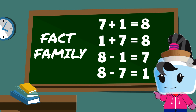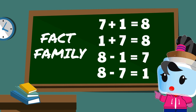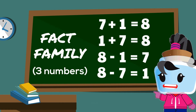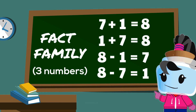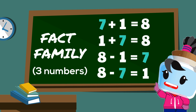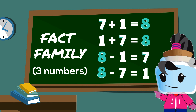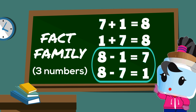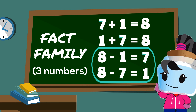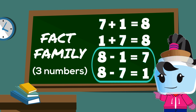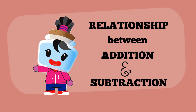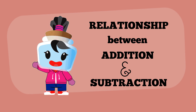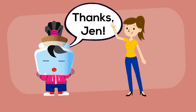A fact family is made of only three numbers. Here we used one, seven, and eight to form two addition and two subtraction equations. And that's how addition is related to subtraction. Let's thank Jen for helping us out!